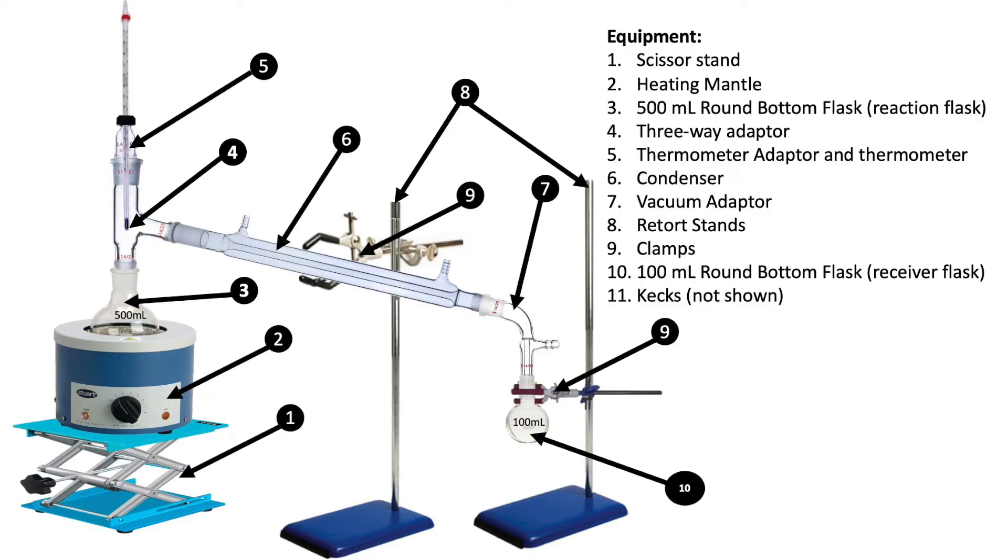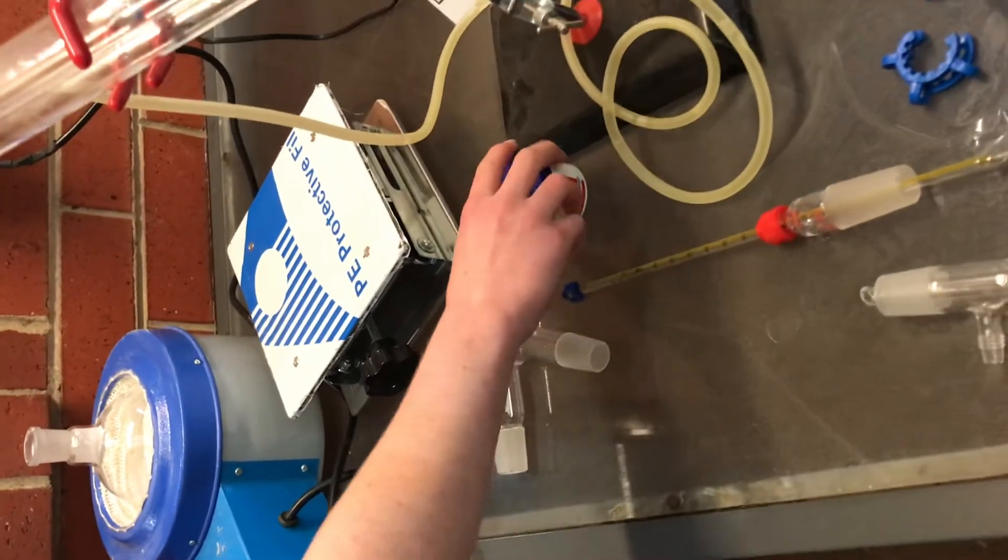The setup I use is a simple distillation. The diagram I made here shows the setup and lists all the equipment I have used. The equipment that I used include the scissor stand, a heating mantle, 500 milliliter round bottom flask, a three-way adapter, thermometer adapter and a thermometer, a condenser, a vacuum adapter, retort stands, clamps, 100 milliliter round bottom flask and keck clamps, which are not shown in this diagram. Now to set up the simple distillation setup.